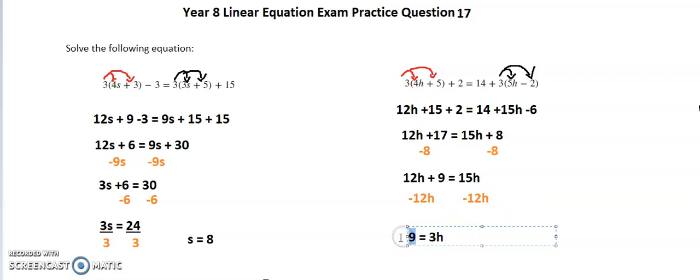Now I'm left with 9 equal to 3h. I need to divide both sides by 3 to get rid of the 3h and just have 1h. That leaves me with h is equal to 9 divided by 3 is 3.